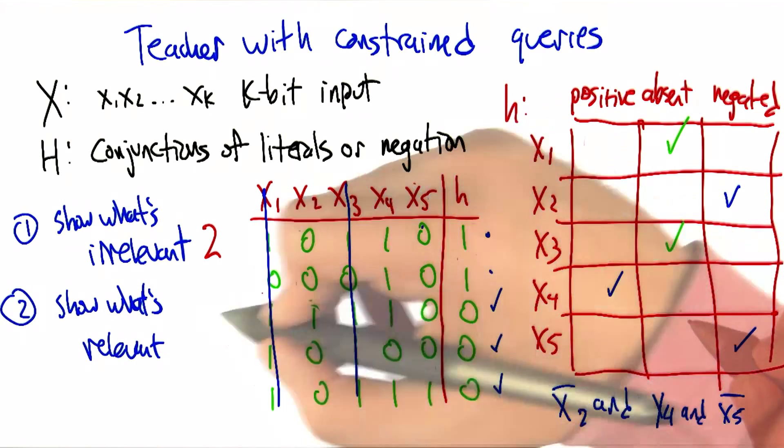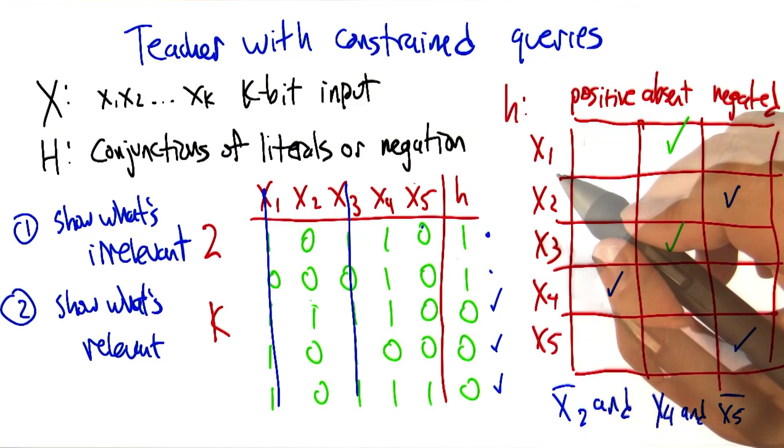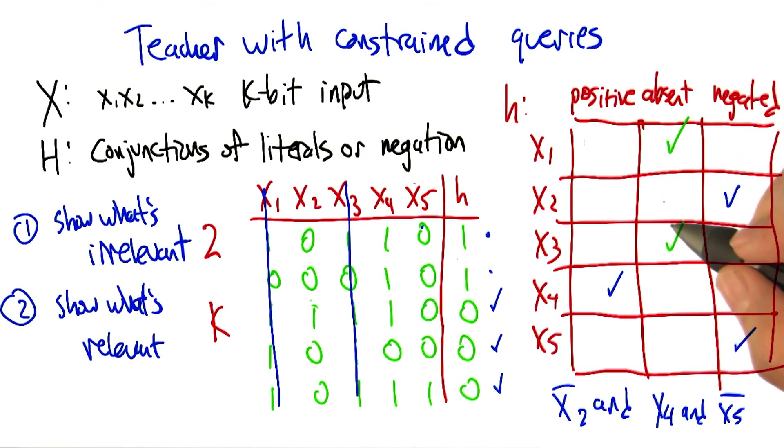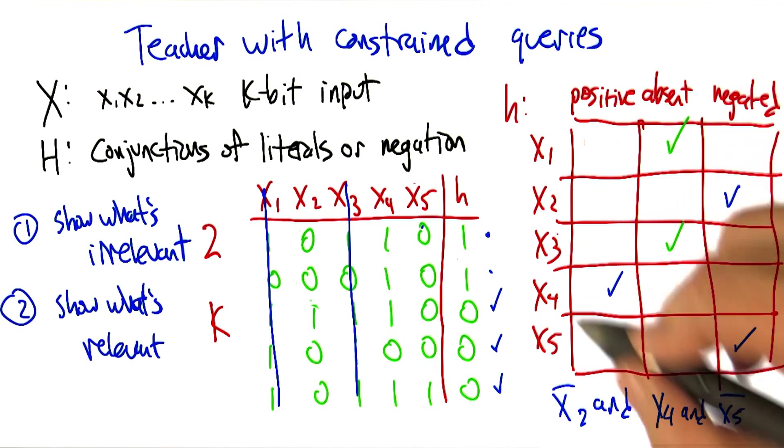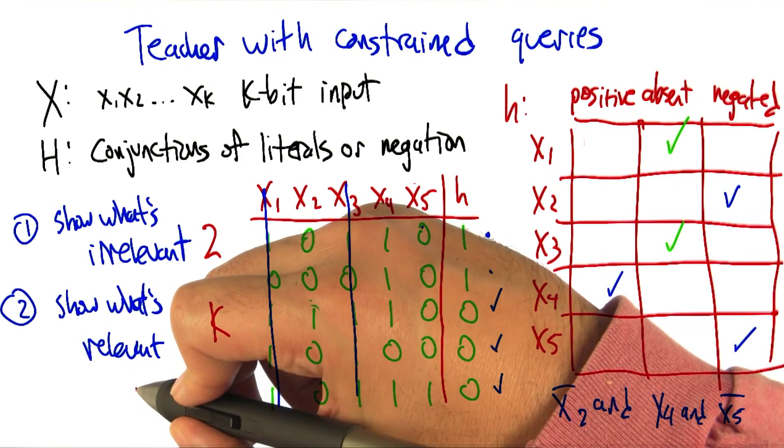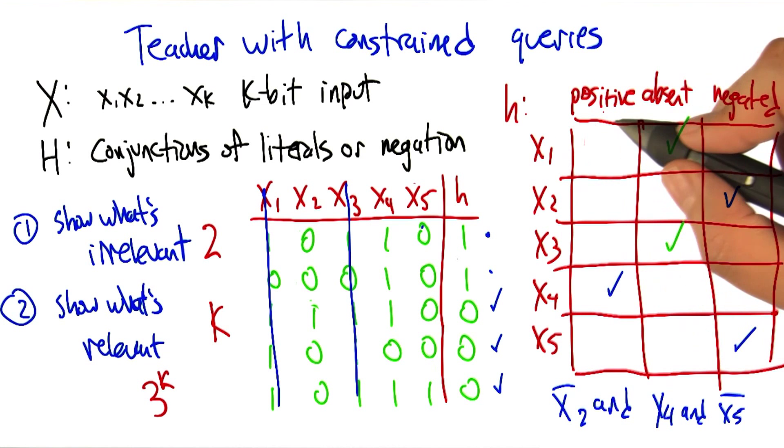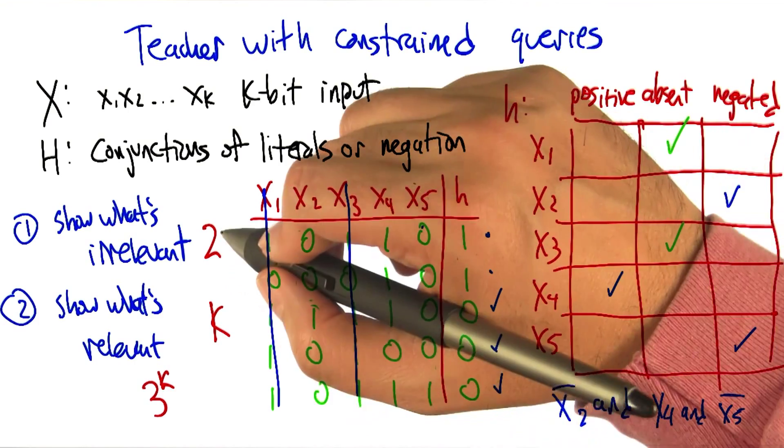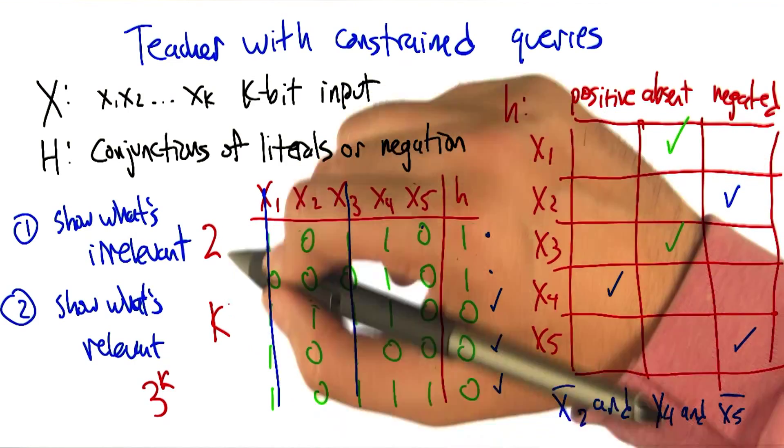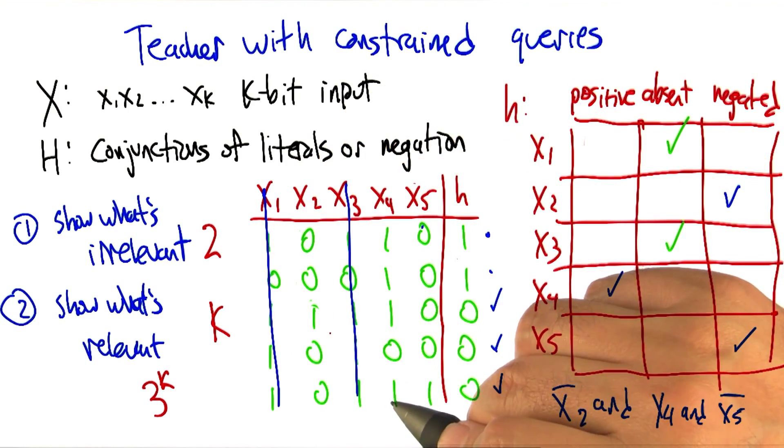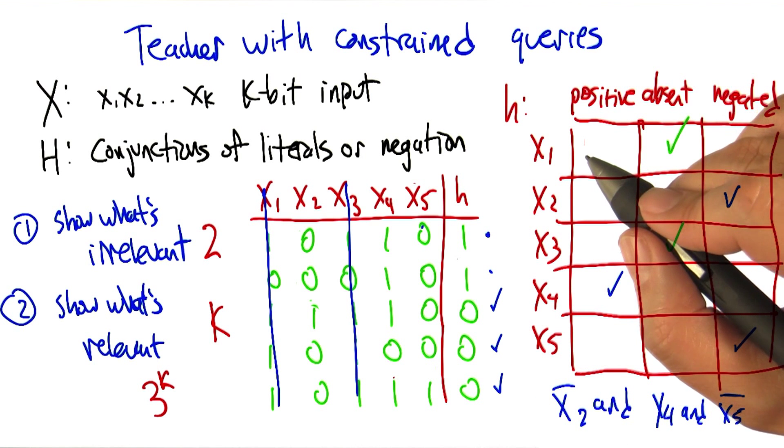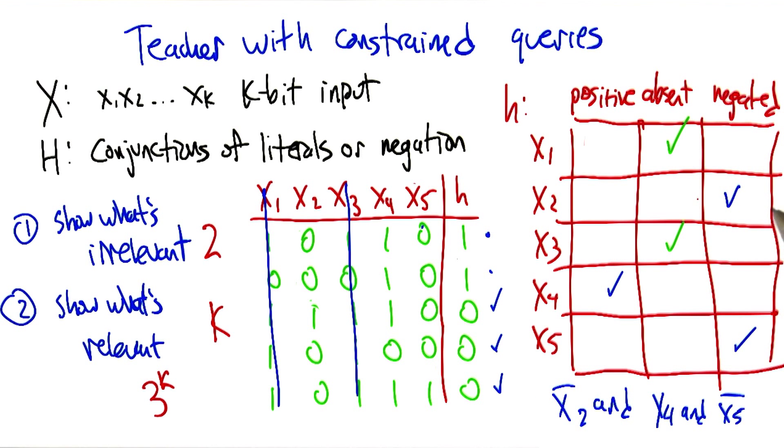Yeah. So it's kind of interesting that in fact, the total number of hypotheses here is three to the k, because you can see it right off this table, that for each of the variables it's either positive, absent, or negated. But the number of questions that a smart teacher had to ask was more like k plus two, which is pretty powerful. Right. So a smart teacher can help me do this in linear time.